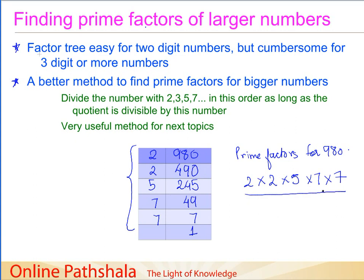To summarize this method: the first step is to divide the number by 2, 3, 5, 7, and so on in order, as long as the quotient is divisible by that number. We keep dividing by the same prime until it no longer divides evenly, then move to the next prime. Continue until you get 1 as the final quotient. We start with these prime numbers — 2, 3, 5, 7 — and that is the only thing to be taken care of.